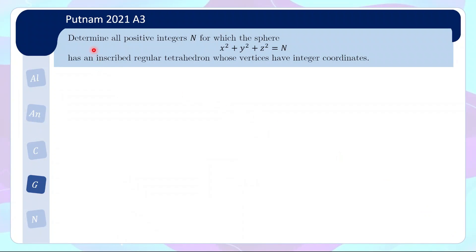Okay, so for problem 3, we are supposed to determine all positive integers n, for which the sphere x² + y² + z² = n. So this is a sphere that has radius √n. So for which the sphere has an inscribed regular tetrahedron, whose vertices have integer coordinates. So in the previous slide, we saw the diagram of the tetrahedron inscribed in the sphere. We want to find all possible n so that the sphere of radius √n, you can put a tetrahedron inside with the vertices at integer coordinates.